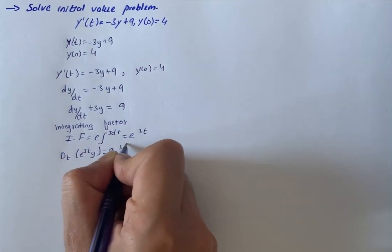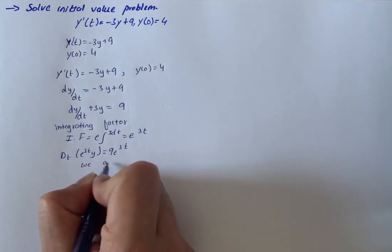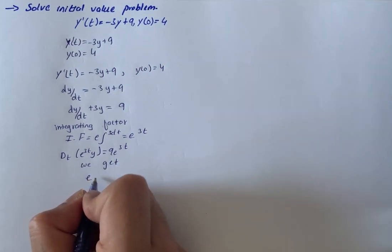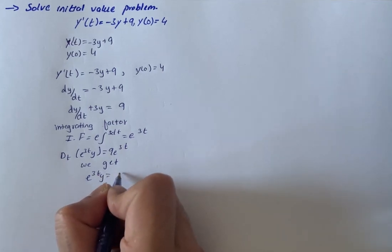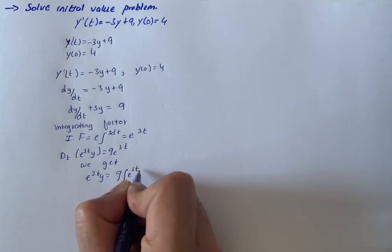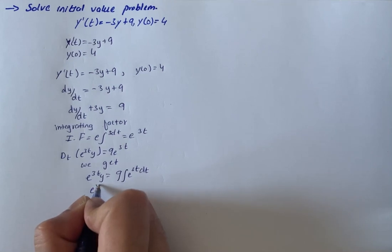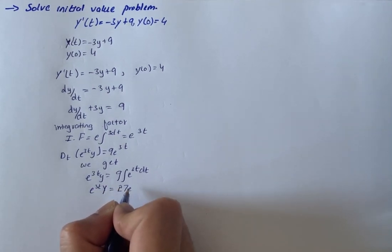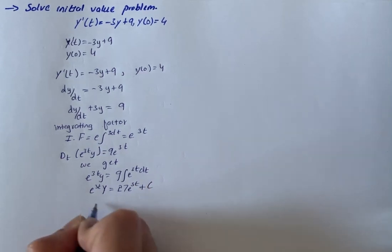Now on integrating, we get e raised to power 3t times y equals 9 times the integral of e raised to power 3t dt. So we have e^(3t) y equals 27 e raised to power 3t plus C.